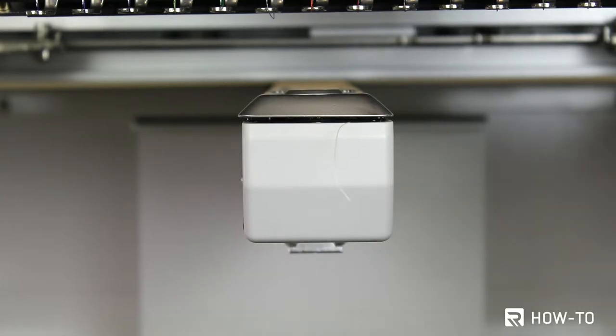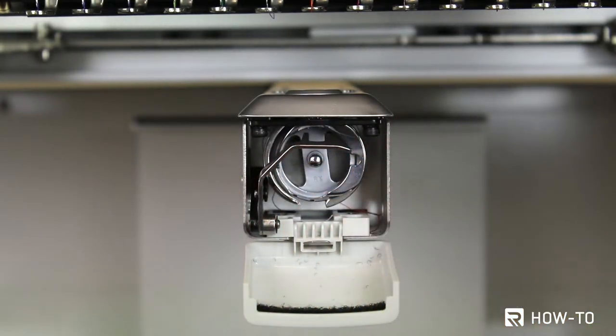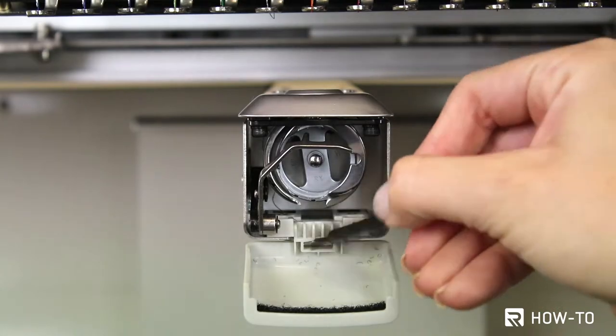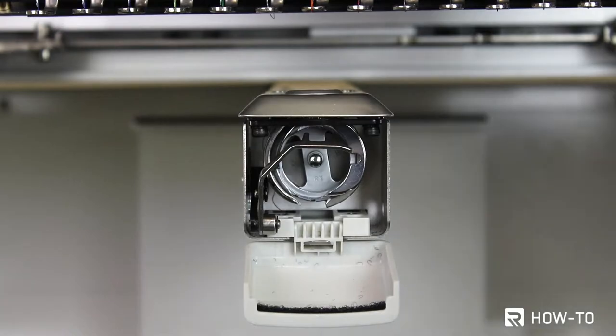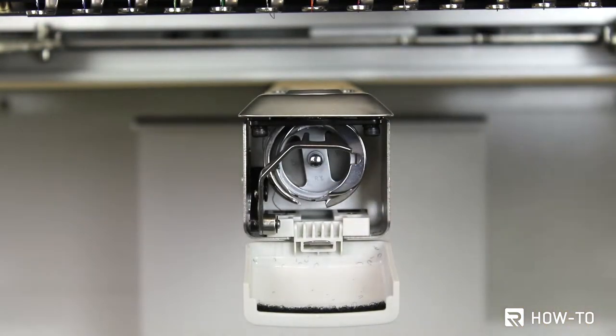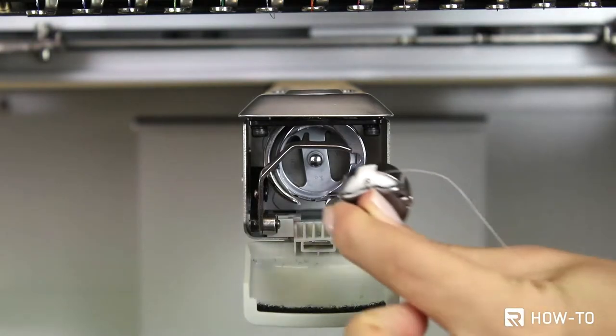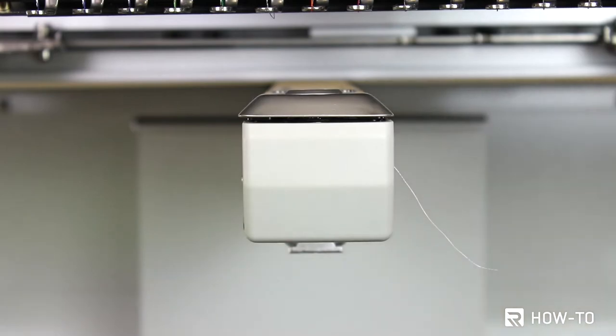Before cleaning or oiling, we recommend turning off your machine. To clean and maintain the rotary hook, start by removing the bobbin case from the rotary hook. Clean any lint or thread in the area using a lint brush or dust-off spray. Then add two or three drops of machine oil to the rotary hook. Now you can insert the bobbin case back into the rotary hook and close the bobbin housing unit.